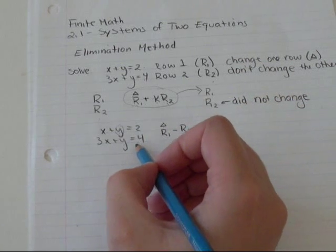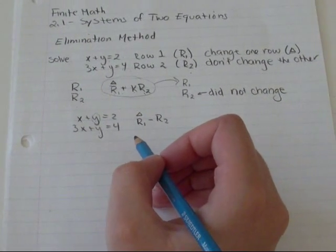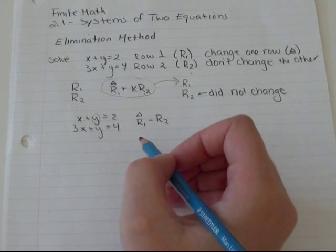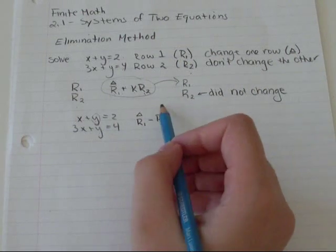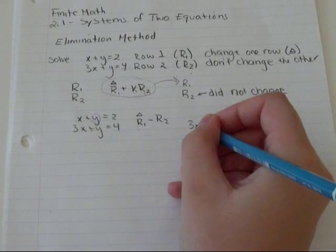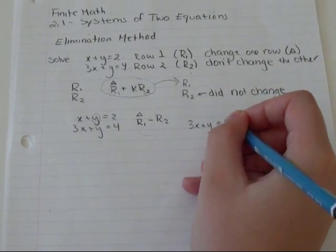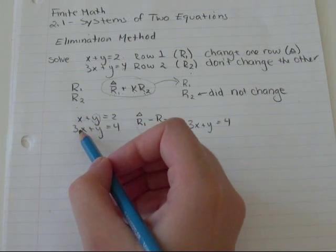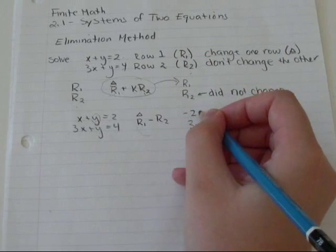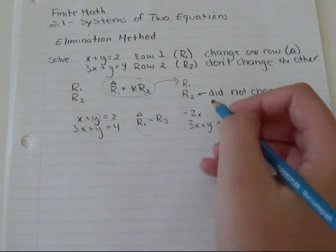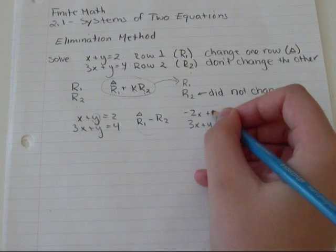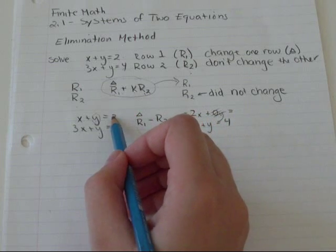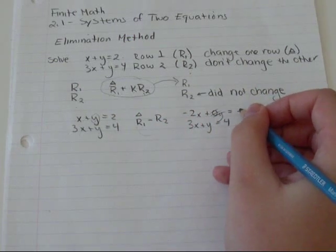So first of all, I'm going to write down R2 because I'm not changing it. And it's just easy for me to remember which row I'm changing if I write down all the rows that aren't being changed first. So 3X plus Y equals 4. R1 minus R2: 1 minus 3 is negative 2X, 1Y minus 1Y is 0Y, equals 2 minus 4 is negative 2.